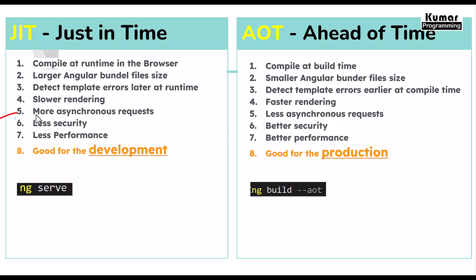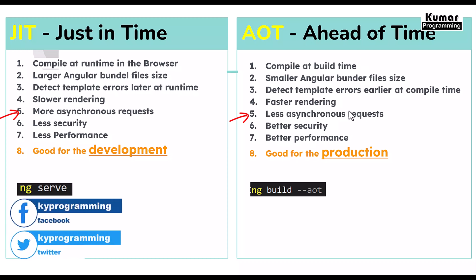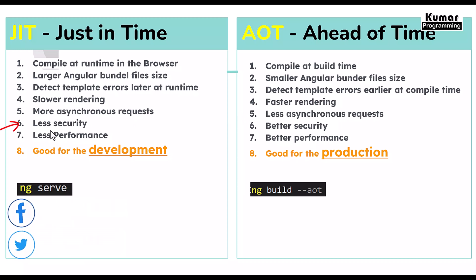The fifth difference: JIT has more asynchronous requests and AOT has fewer asynchronous requests — I'll show this in the practical demonstration. The sixth difference: JIT has less security because the code is exposed to the end user, but AOT has better security because the code is not exposed. Finally, JIT has less performance since it handles both compilation and rendering at runtime, whereas AOT has better performance.